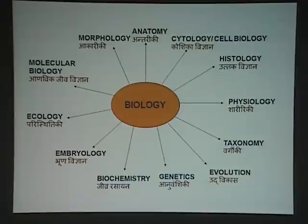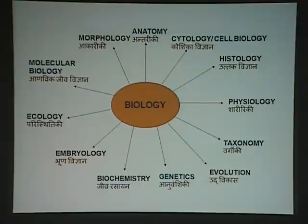Take the cockroach — it lacks notochord, dorsal tubular nerve cord, and pharyngeal gill slits. Therefore it is a non-chordate.